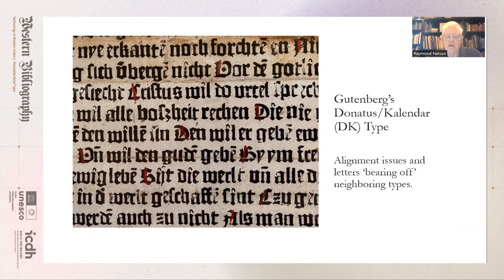As for any question whether Gutenberg's types were movable, you can see here that there are irregularities in the alignment and the impression of some letters that clearly demonstrate that they are separate, interchangeable types.